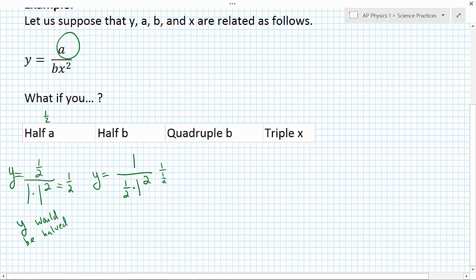When I divide by a fraction, I multiply by the reciprocal, and that's going to be equal to twice as much. So when I half b, y actually is doubled. Another way you could say that is y is increased by a factor of two.